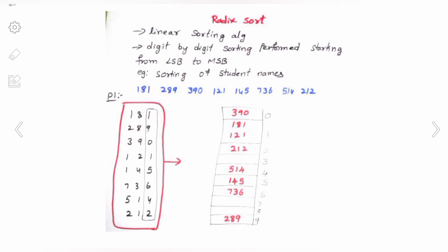Here we consider the digit position in the number, and based on the position of the digit we are going to perform the swapping. Radix Sort is completely different from the remaining sorting techniques like bubble sort, insertion sort, and selection sort. In those, we are directly comparing two numbers, but here instead of comparing elements directly, we consider the digit position in the number.